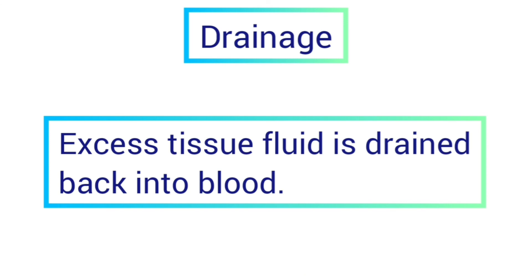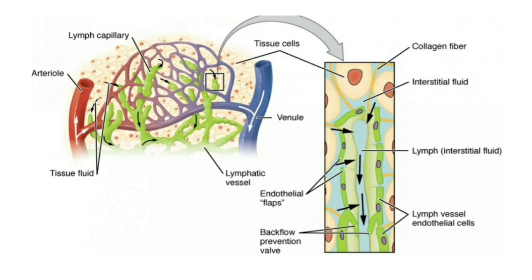Finally, drainage is another function of lymph. The lymph drains excess tissue fluid from the intercellular spaces back into the blood. Tissue fluid is a fluid that surrounds the cells of most tissues, arriving through blood capillaries. This excess tissue fluid is drained back into the blood.